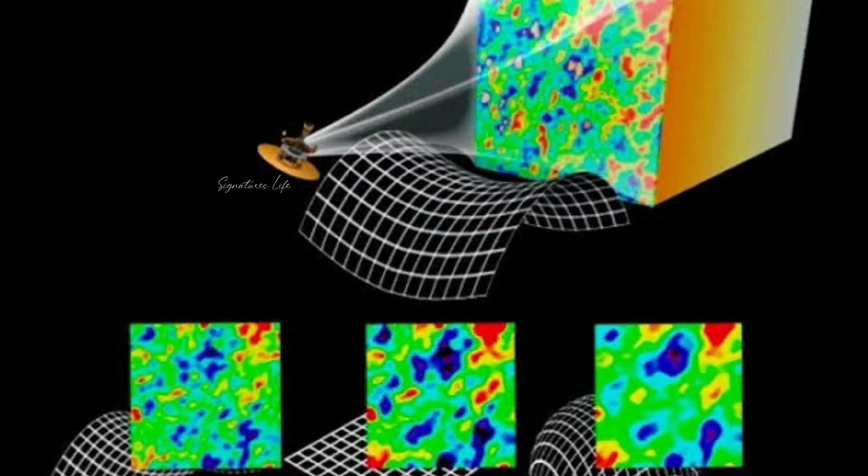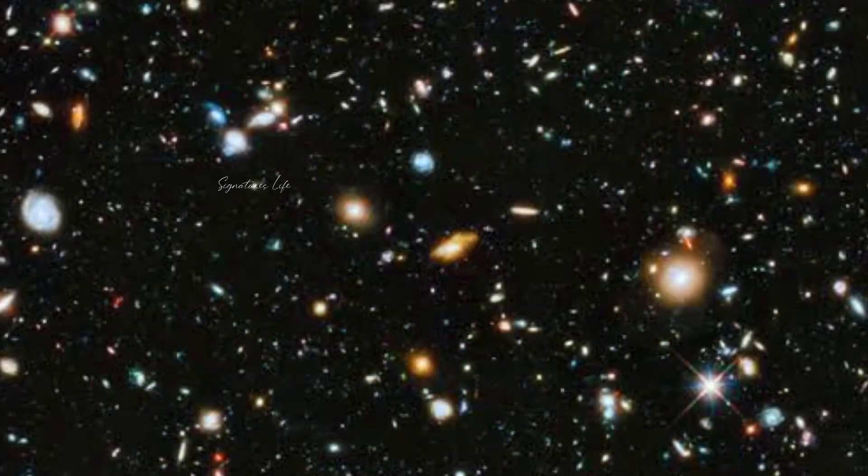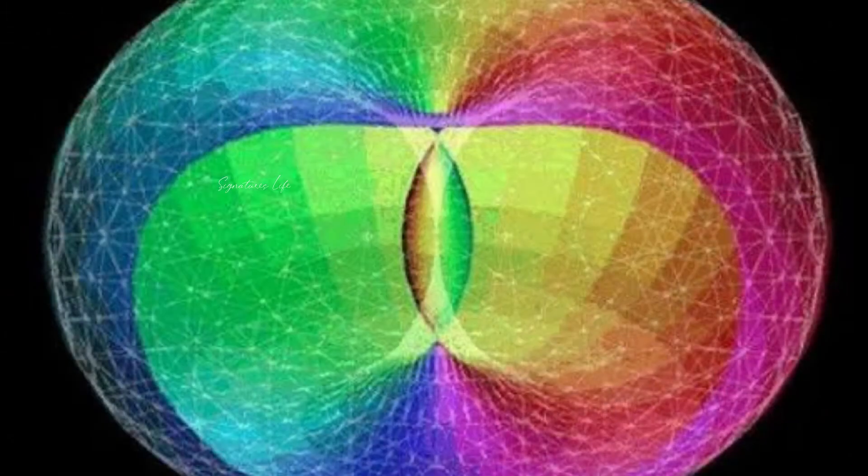For a matter that bears on such grand questions, its components are remarkably simple. The ultimate structure of the universe depends on just two factors: its density and its rate of expansion.